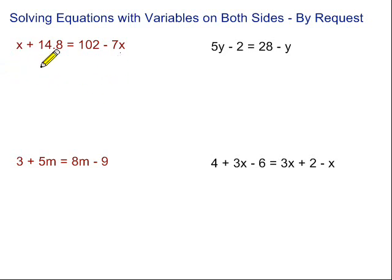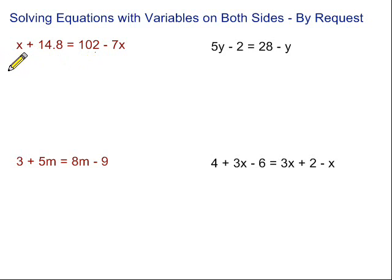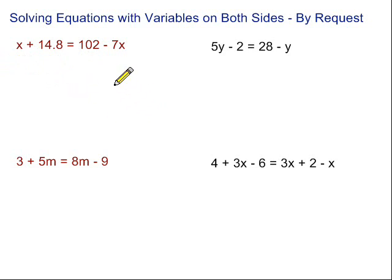So as we look at our first equation here, we have an x over here, a minus 7x, and an x over here. We want to get them all together. It doesn't matter which side we choose to put them on, but sometimes it's easier going one way or the other, depending on if you like positives or negatives.